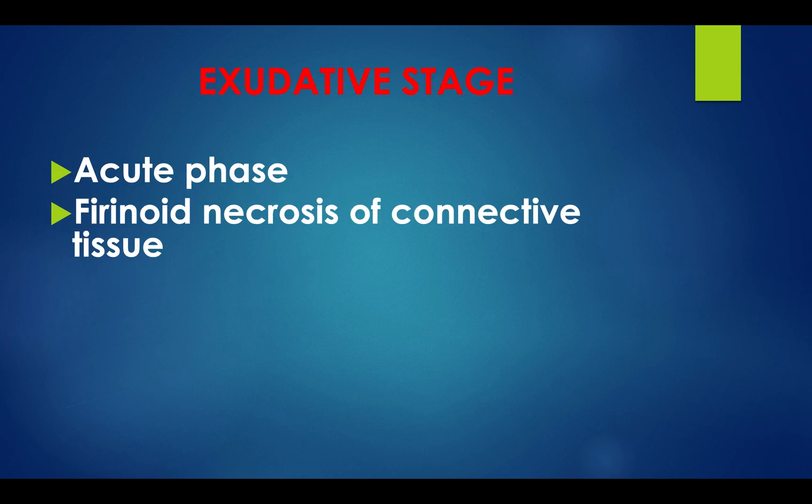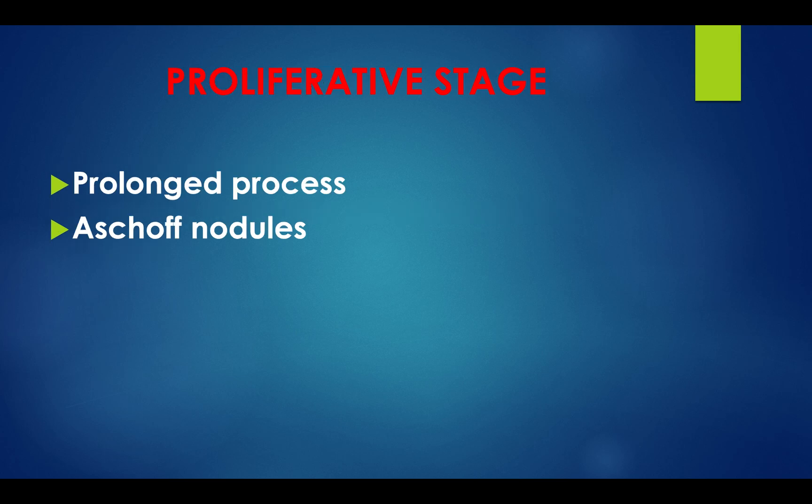The exudative stage is an acute phase in which fibrinoid necrosis of connective tissue takes place. The second stage — the proliferative stage — is a prolonged process in which Aschoff nodules are seen.